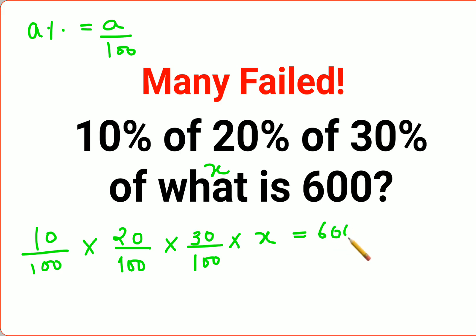'Is' means equal to, which is 600. So now what you can see, these zeros are cancelling and what happens next is we have 6 upon 1000 times X equals 600.